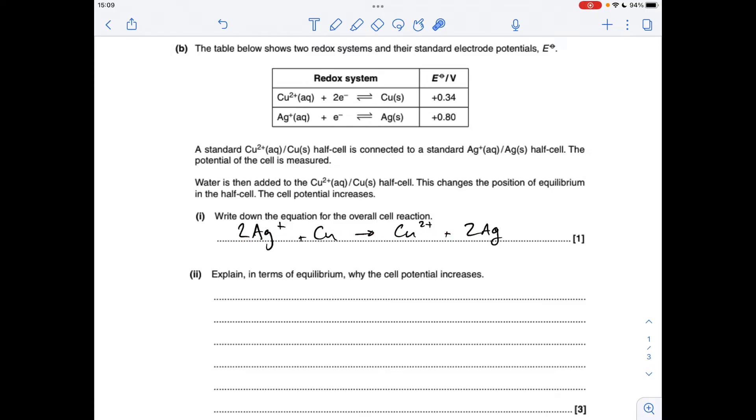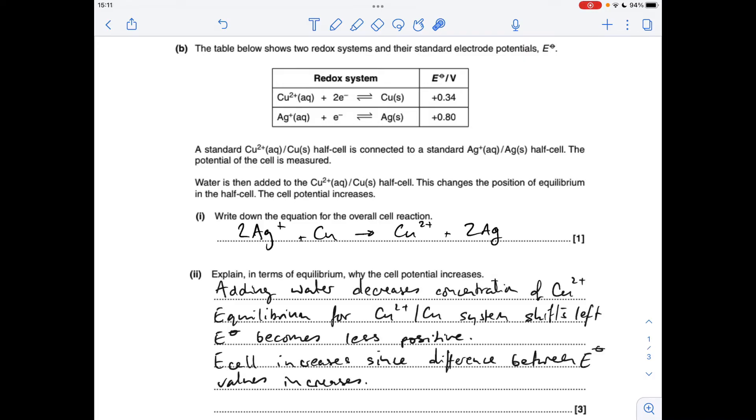Next part, we've got to factor in the information about the water. Water is added to the copper 2 plus copper half cell, which affects the position of the equilibrium and the cell potential increases. If you add water, you are lowering the concentration of the copper 2 plus ion. That's going to mean the equilibrium is going to shift to the left to build the concentration of the Cu2+ back up. That's going to lower this electrode potential value because it's not moving forwards as much, and therefore the difference between the two electrode potentials is increased, and that's why the cell potential increases.